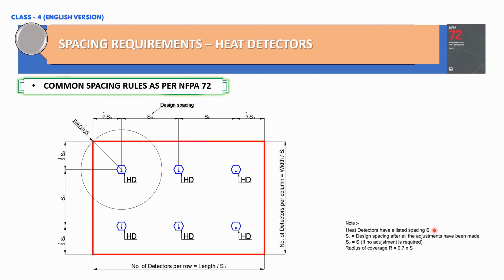NFPA 72 has provided a listed spacing S. The actual or design spacing between heat detectors is denoted by SD — this is the spacing after all adjustments have been made. Whenever there is a change in ceiling height, the spacing varies, which is why we use SD. SD will equal S if no adjustment is required.